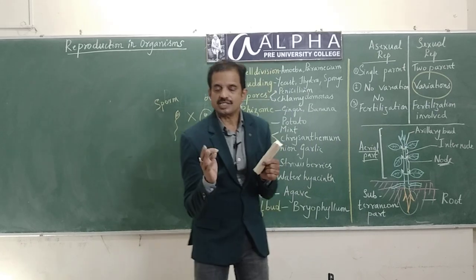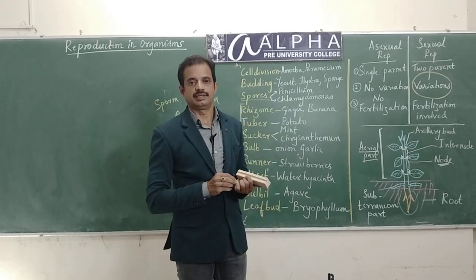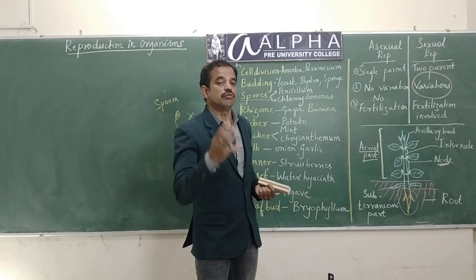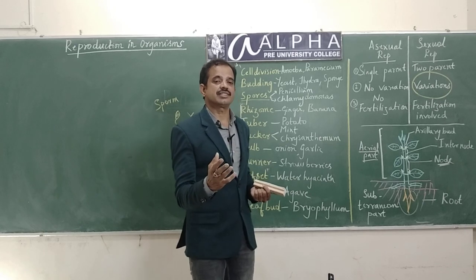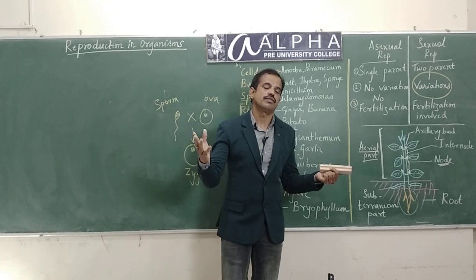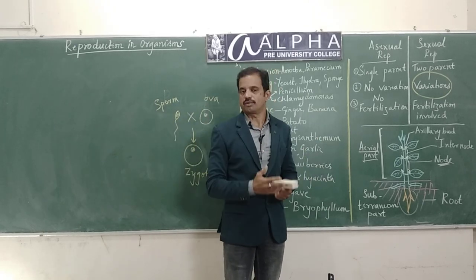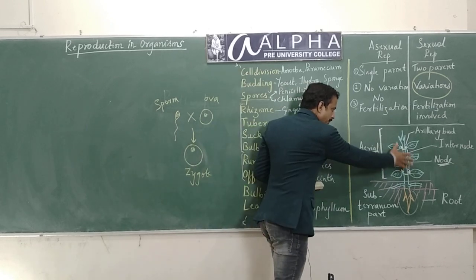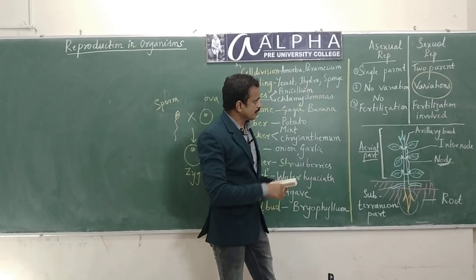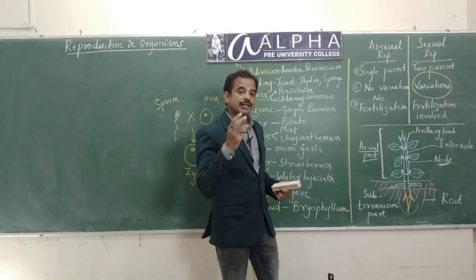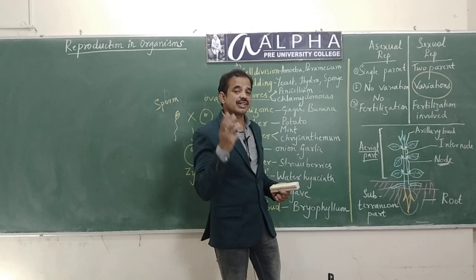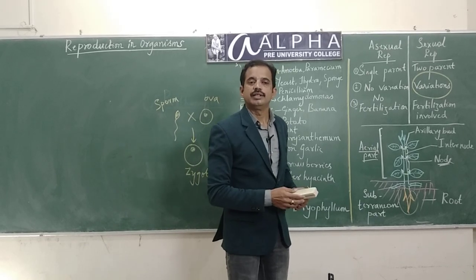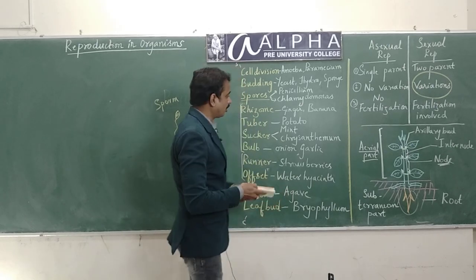This genetic recombination is the basis for the variations seen in Sexual Reproduction. And this also explains why variations are not seen during Asexual Reproduction - since there is no fusion of gametes from different genetic backgrounds, there is no genetic recombination.